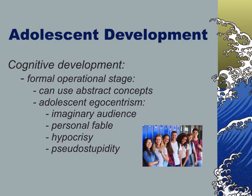Then we get to the formal operations stage, which is really in adolescence. You start to get the idea of abstractions — reading books that help you develop as a person, thinking about philosophies and ideologies. You're still sort of the center of your own story, which relates to personal fable — one of my favorite ideas — where you're the Harry Potter of your story. People tend to grow out of that, but it's very common, especially in early adolescence.